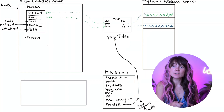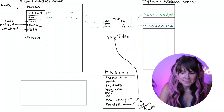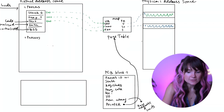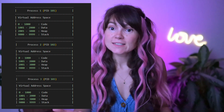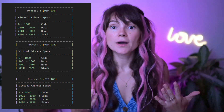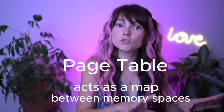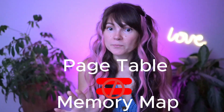Here are more examples: virtual address 1000, corresponding to the heap section, can be translated to address 30 in physical memory; virtual address 900, corresponding to the text section, can be stored at address 15 in physical memory. The key point is that virtual memory enables each process to function within its own separate virtual address space, while physical memory may be fragmented or shared among various processes. Note that the page table acts as a map between two memory spaces — do not confuse it with the memory map.